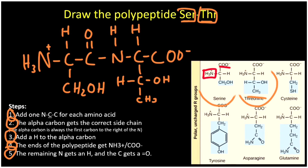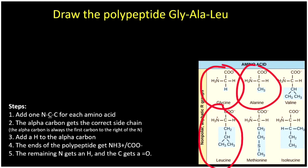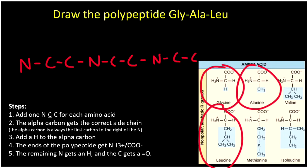Let's practice again using three amino acids: glycine, alanine, and leucine. We want to link those together, so let's circle them on our chart. Step one: draw N-C-C for each amino acid — this time three, so we draw N-C-C, N-C-C, N-C-C. Because we have three amino acids we'll end up with two peptide bonds. Step two: add side chains to the alpha carbons — the first, second, and third alpha carbons are each just to the right of their nitrogen.